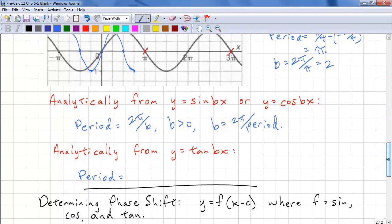If we're going to calculate the period analytically from y equals tan bx, we have period equals pi over b, where b is greater than 0. And we can calculate b as pi over the period.